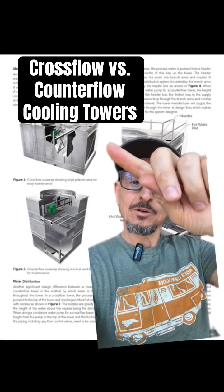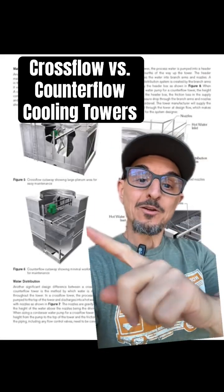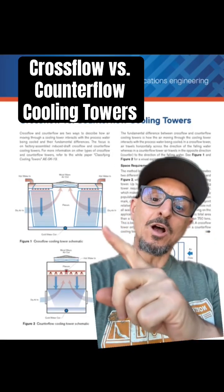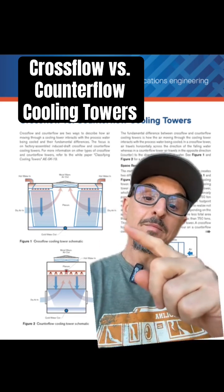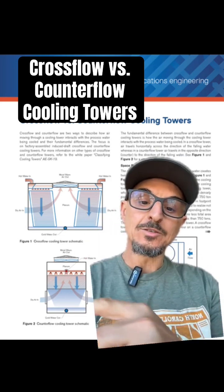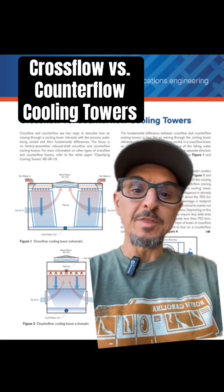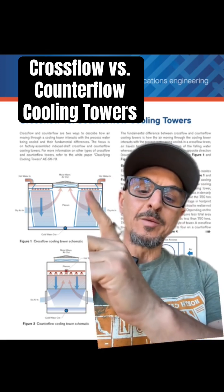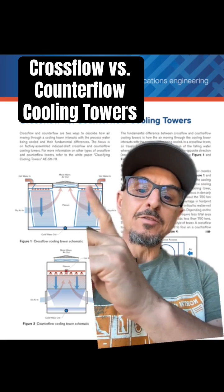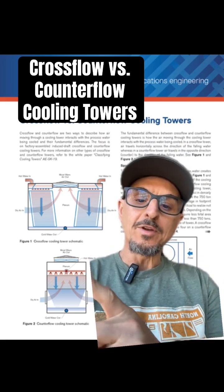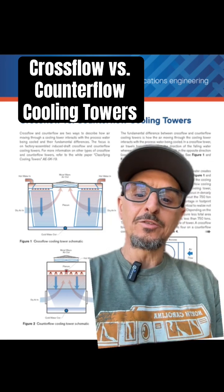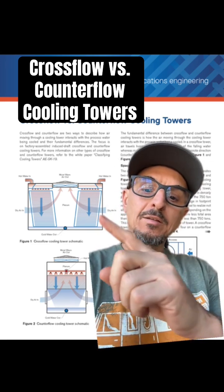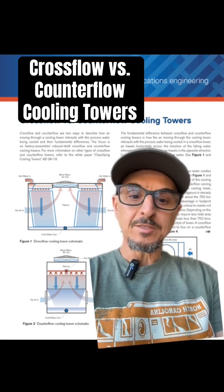Do you understand the difference between a cross flow and a counter flow cooling tower? Let me explain. The title cross flow and counter flow comes from the way the air enters the cooling tower and interacts with the fill. In cooling towers 101, your water is distributed at the top of the tower, either through a basin or through nozzles on the counter flow. The water falls over the fill and the outside air is pulled in to cool the water.